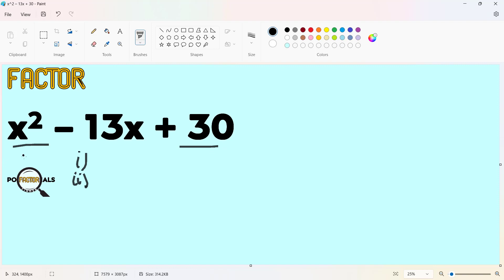Our first term, x squared, already met that criteria. x squared is a perfect square of x. For our second term, 30 is not a perfect square of any integer.